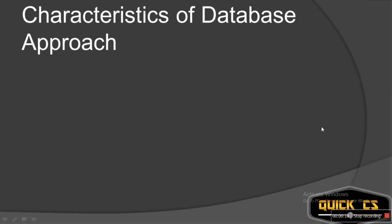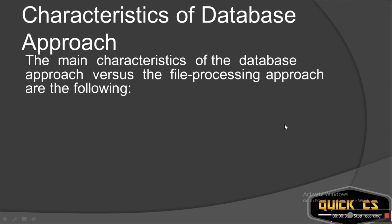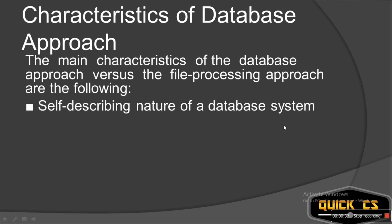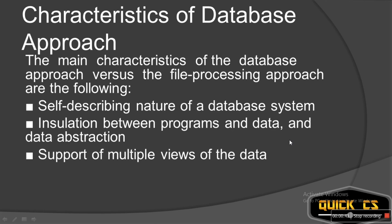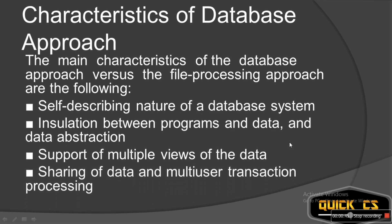So first thing — what are the characteristics of database approach? Now there are two approaches: file system approach and database approach. Today we'll be learning about characteristics of database approach. There are total four characteristics. First is called self-describing nature of database system. The second is called insulation between programs and data and data abstraction. Third is called support of multiple views of the data. And the fourth is called sharing of data and multi-user transaction processing. So these are the four characteristics that you need to understand, and we'll look at them in detail one by one.